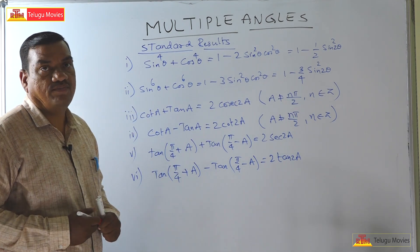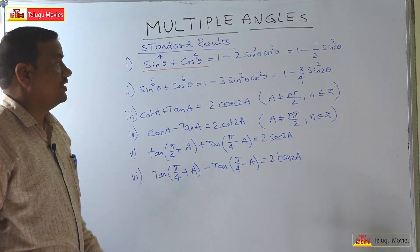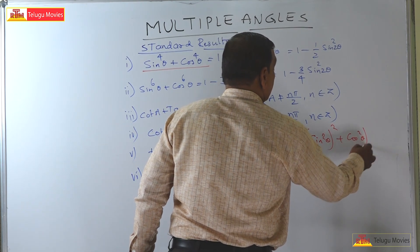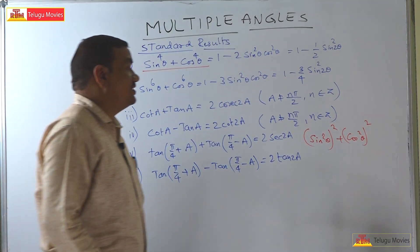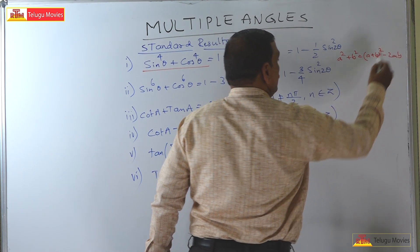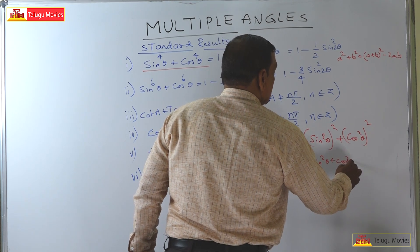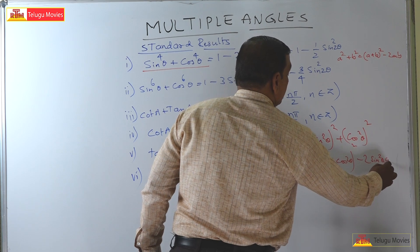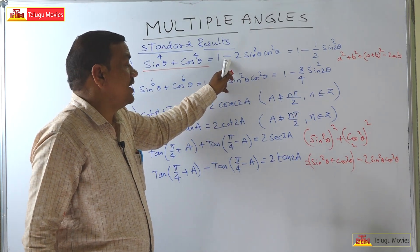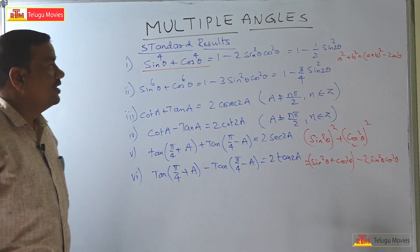For the proof of the first result, sin⁴θ + cos⁴θ can be written as (sin²θ)² + (cos²θ)². This is in the form a² + b² = (a + b)² − 2ab. So this equals (sin²θ + cos²θ)² − 2sin²θ cos²θ. Since sin²θ + cos²θ = 1, this gives 1 − 2sin²θ cos²θ.